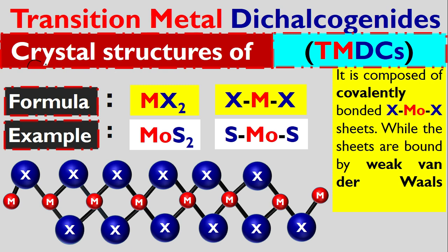Let us discuss the crystal structure of transition metal dichalcogenides. This material comes with a simple formula MX₂, where M is a transition metal and X is a chalcogen atom.